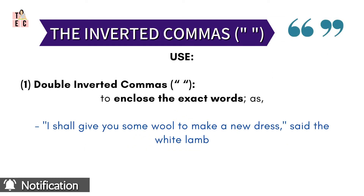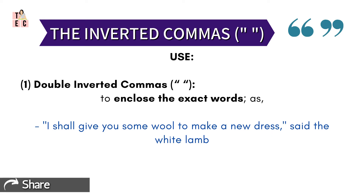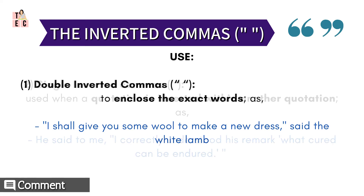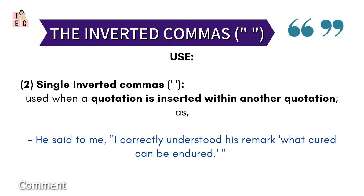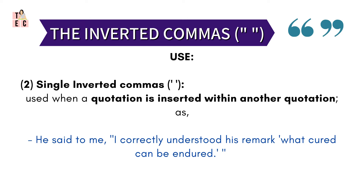The inverted commas are used to enclose the exact words of a speaker or a quotation, and they are of two types. Double inverted commas are used for direct speech: 'I shall give you some wool to make a new dress,' said the wild lamb to the little girl. Single inverted commas are used generally when a quotation is inserted within another quotation, like: He said to me, 'I correctly understood his remark, "what cannot be cured, can be endured"' — where the inner phrase is the quote within a quote.